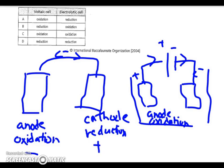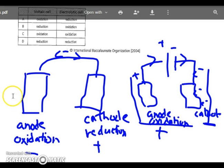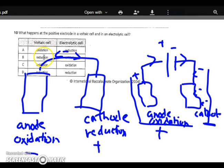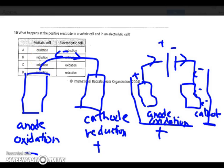In an electrolytic cell, electrons are pushed from the negative end of a power source. The anode is where oxidation occurs and electrons are lost — that's now considered the positive end. The cathode is the negative end where reduction takes place. So the electron flow direction is the same, but the polarity labels are reversed compared to a voltaic cell. In the voltaic cell, the positive end is where reduction takes place; in the electrolytic cell, the positive end is where oxidation takes place — so B is the correct choice.